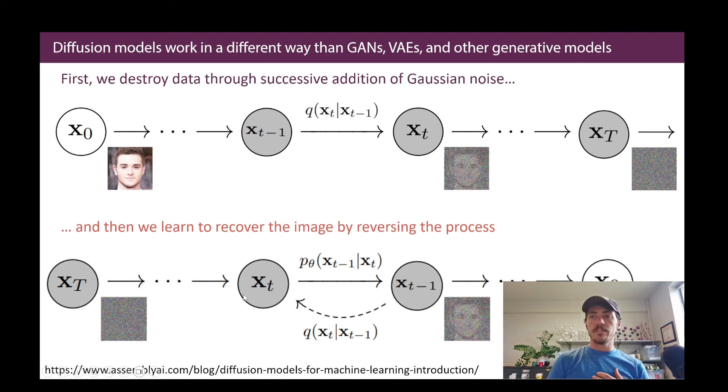And once it's purely Gaussian noise at this point, XT, we then learn how to recover the image by denoising it, by reversing this process essentially. And obviously this could be applied to images, but also audio or text. It's the same sort of approach can be applied to all these different types of data sets.